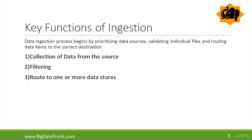Some of the key functions of data ingestion: the process begins by prioritizing data sources, validating individual files, and routing data items to the correct destination. First is the collection of data from sources, which can be click streams, data center logs, sensors, APIs, or even databases. These use various data formats like structured, unstructured, and semi-structured, and can make data available as a stream or in batches. Then there is the filtering part, and then routing to one or more data stores. Routing can be simple or complex, with routing rules based on attributes of the data and automatic conversion of data types and formats.